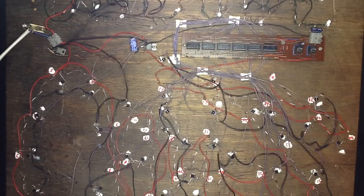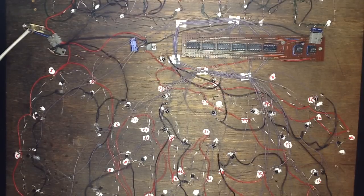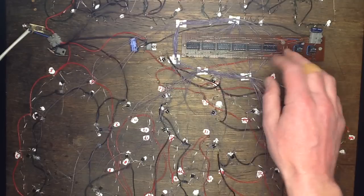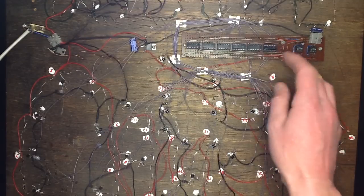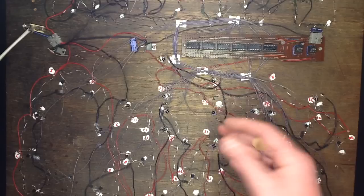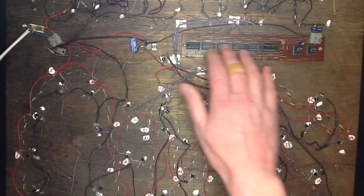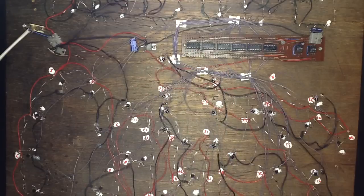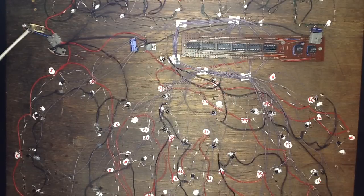4015 is a CMOS dual 4-bit shift register. But you can cascade them internally. Well, you can cascade the two internal shift registers by an external link to turn it into an 8-bit shift register. In this case, I've got six of them end-to-end. Is that about 54?